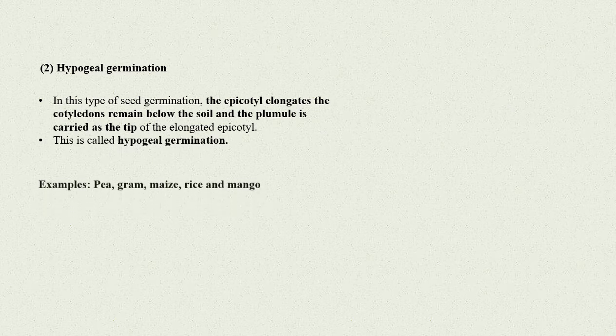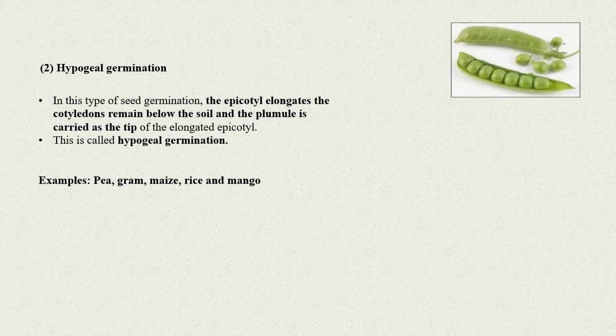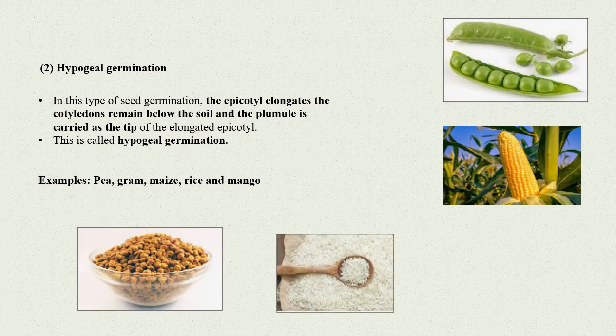Examples of hypogeal germination are pea, gram, maize, rice, and mango.